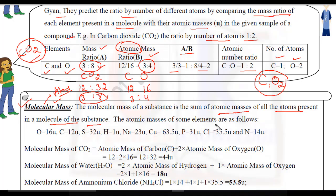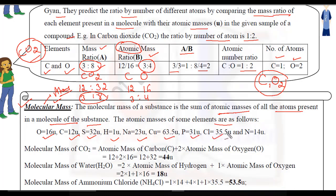The atomic masses of some elements are as follows: Oxygen = 16 U, Carbon = 12 U, Sulfur = 32 U, Hydrogen = 1 U, Sodium = 23 U, Copper = 63.5 U, Phosphorus = 31 U, Chlorine = 35.5 U, and Nitrogen = 14 U.